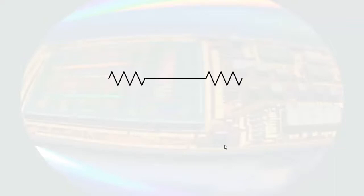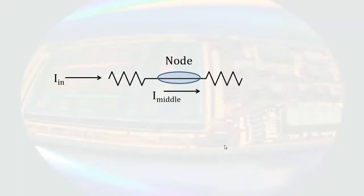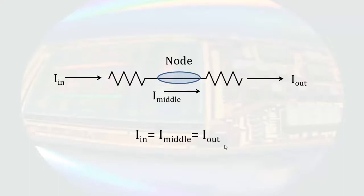Let's start with two resistors. If I connect these two resistors so that they share a node, and if a current IN enters this pair of resistors, we can see by Kirchhoff's current law that current has to pass through the wire that connects them and come out the other end. Since they are connected so that they share a node and have the same current going through them, they are in series.